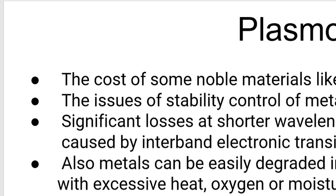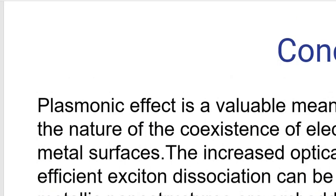Conclusion. Plasmonic effect is a valuable mean to improve the solar cell efficiency through the natural coexistence of electrons and photons in confines. Nanostructure metal surface. The increasing optical absorption, extended wavelength range, and efficiency exciton dissociation can be achieved by the plasmonic effect when metallic nanostructures are embedded within the organic cell device.